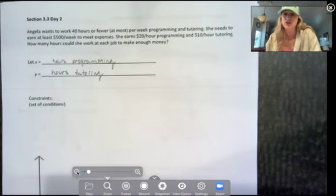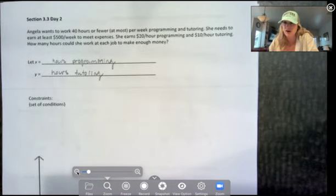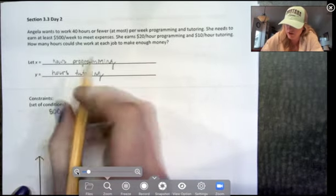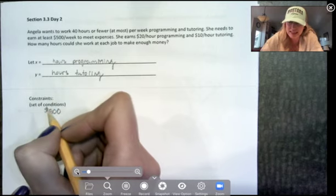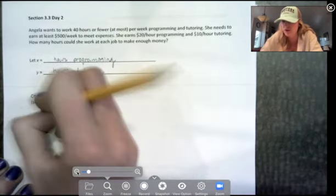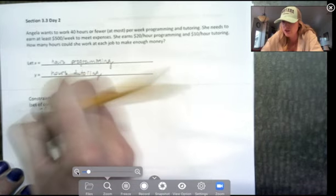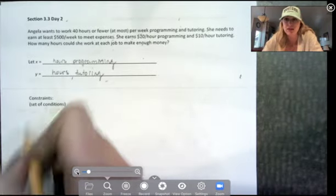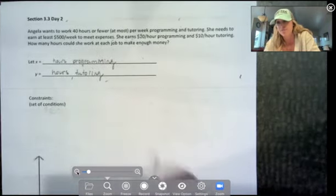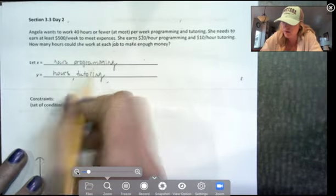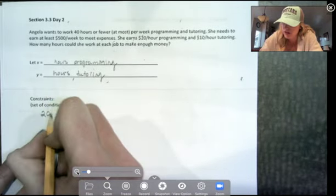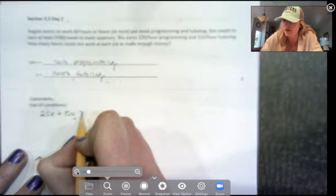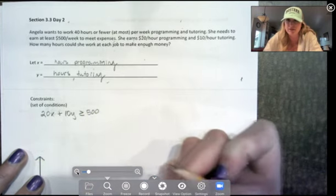So her constraints are she must make at least $500. I'm going to go ahead and write those as my inequalities. So she needs to make at least $500. She'd be happy if she made more than $500, so we need an inequality involving the money. So x is our programming hours, so 20x plus $10 for each hour she tutors, and that can be greater than or equal to $500, but minimum must be $500.